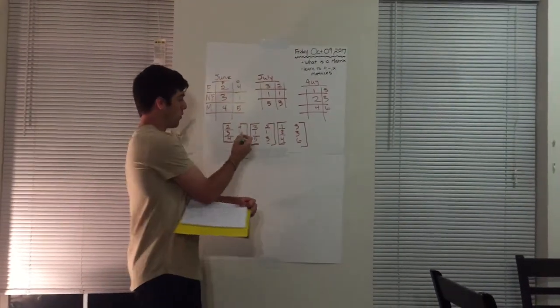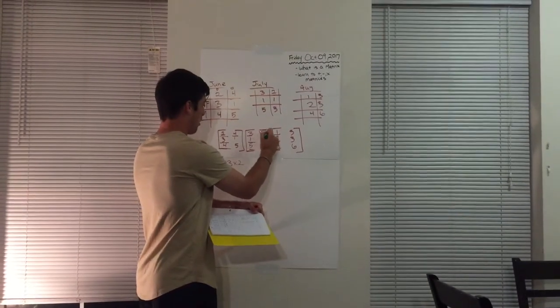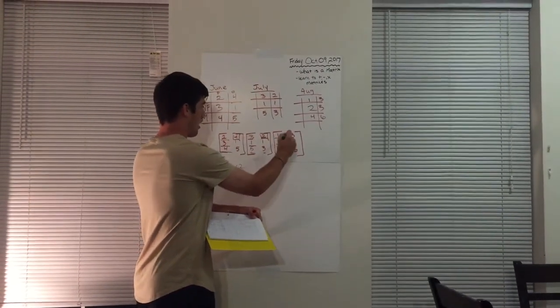Once you get done with that, you go on to the next column. So it's the four, the two, two, I'll box that so you get the, and three.